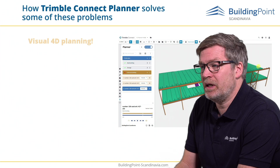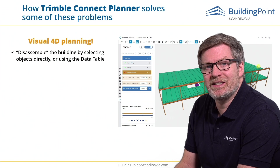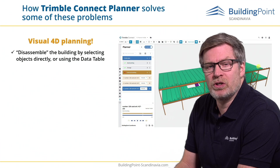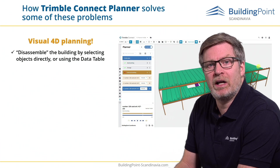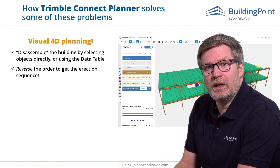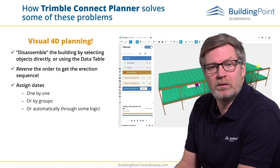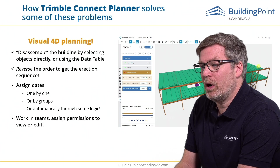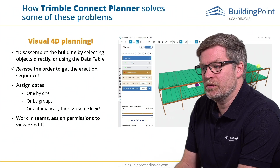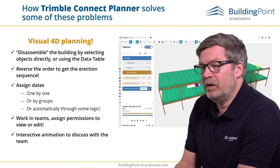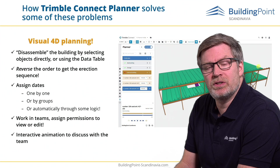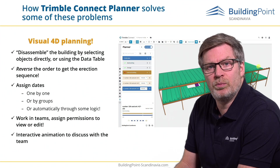A solution for this is the Planner Extension — it's visual 4D planning. We start by disassembling the building, a top-down approach where we start with the last object first. Then we reverse the order in the plan to get the erection sequence. We add dates one by one, in groups, or with some logic. Then we go through how we work in the team, assign permissions — view or edit. The interactive animation is a very good tool to get feedback from the team and show how you have planned your erection sequence.